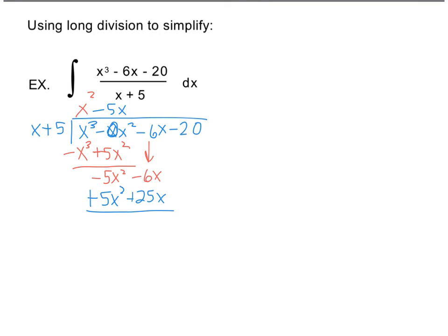And so that's going to give me 19x minus 20. So now what I want to do is I know that 19 times x is 19x. So I'm going to add 19 up here. This will be 19x plus 95. 19 times 5 is 95. And then subtract. Don't forget to subtract. So that's going to give me negative 115. And that, since I'm done with that, is my remainder.